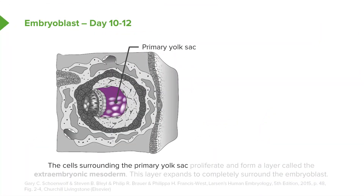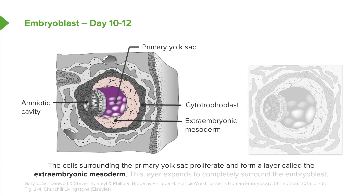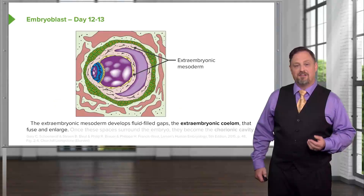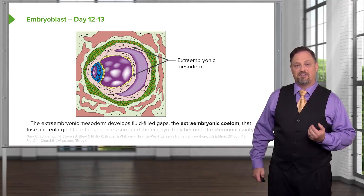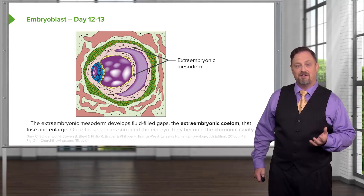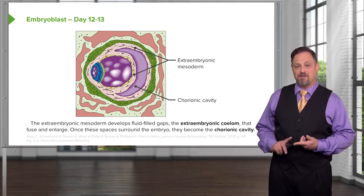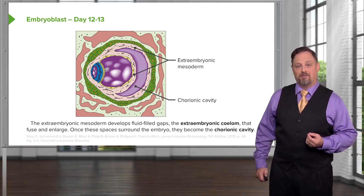Moving further along, the primary yolk sac and embryo become separated from the surrounding trophoblast cells by a distinctive set of cells called the extraembryonic mesoderm. This extraembryonic mesoderm does not contribute anything of substance to the actual embryo, but allows it to develop fully inside the uterus and separates it from the placenta. Cavities begin appearing inside the extraembryonic mesoderm; these cysts fuse and become what is known as the extraembryonic coelom — a space forming outside the developing embryo — which enlarges to completely wrap around the yolk sac and embryo, forming the chorionic cavity.